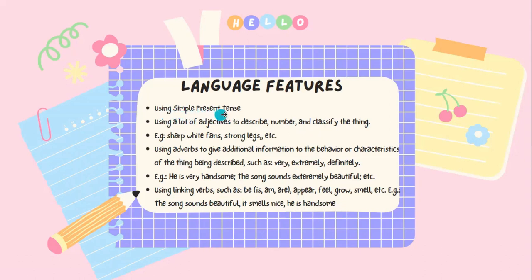Untuk ciri bahasa yang pertama, using simple present tense — waktu di bangku SMP juga pernah dibahas tenses ini, di mana tenses ini untuk menyatakan sebuah fakta atau kejadian yang berulang kali. Rumusnya menggunakan kata kerja pertama. Contohnya: 'Rina goes to school by bike everyday' dan 'I drink milk every morning.'